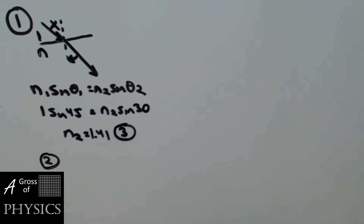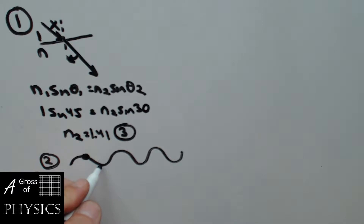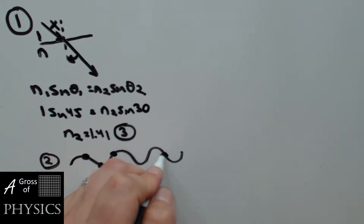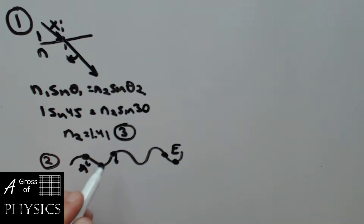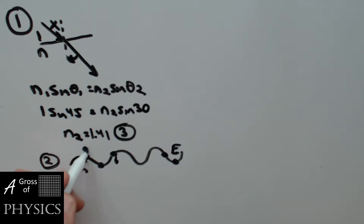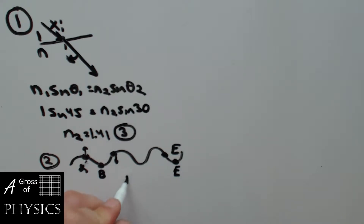For number two, we have a wave with a number of different points, A all the way to E. It's asking which points are in phase. To be in phase, you need to be doing the same thing at the same time. A is actually going to move up because of what's behind it. But B and E are going to be doing the same thing at the same time, and they're the same displacement away. So it's choice four.